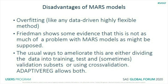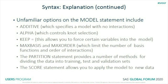There are some disadvantages. Overfitting is a concern, though Friedman shows it's less of a problem with MARS than you might think. The other issue is that the model output is, to put it mildly, not intuitive. Key options on the model statement include ADDITIVE (no interactions), ALPHA (controls number of knots), KEEP (forces certain variables into the model), MAXPHASES, MAXORDER, PARTITION (divides data into training/validation), and the SCORE statement.